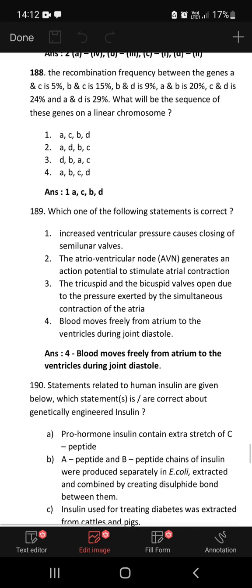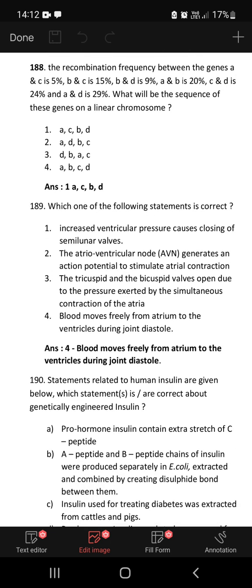The recombination frequency between the genes: A and C is 5 percent, B and C is 15 percent, B and D is 9 percent, A and B is 20 percent, C and D is 24 percent, and A and D is 29 percent. What will be the sequence of these genes on linear chromosome? The sequence will be A, C, B, and D. That is the sequence of it. You have to plot it and then write this part of it, gene mapping.